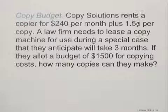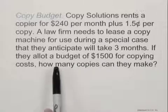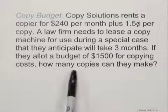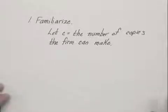We're going to solve this using the five-step problem-solving process, and the first step is to familiarize ourselves with a situation. When we do that, we might want to first ask ourselves what we're looking for, and we're looking for how many copies they can make. So we'll define our variable first. We will let C equal the number of copies the firm can make.